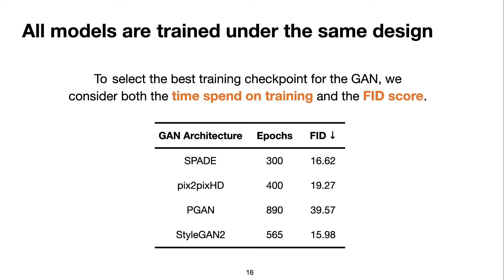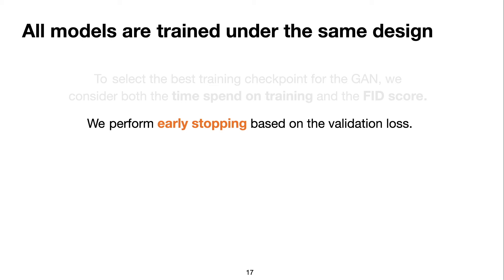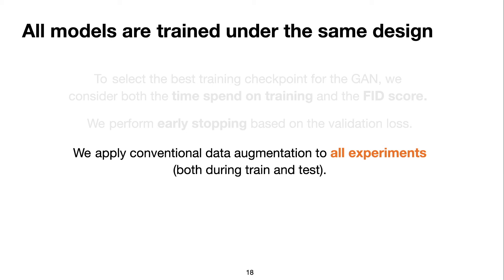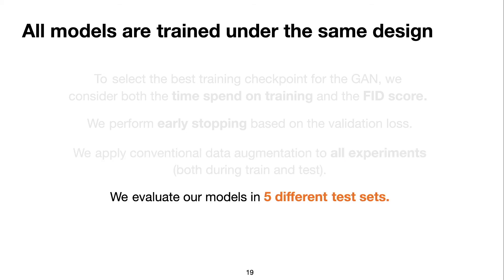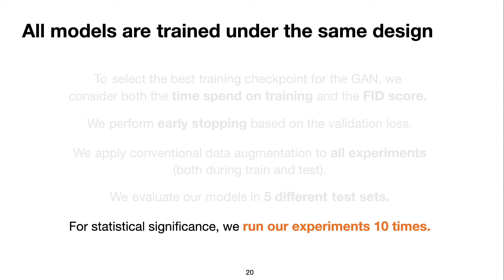To evaluate and analyze the factors I've shown, we carefully designed our experiments to consider all networks involved at their best performance, including the generative models. We select the GAN checkpoint used to generate the images based on time spent on training and the FID score, which is important because it directly influences the quality of the synthetic images we use. We also perform early stopping based on the validation loss, allowing each model to be at its peak performance at the time of evaluation. We apply conventional data augmentation to all our classifiers, both during training and test, since this can mitigate some fluctuations and also make our baseline stronger. To have a more reliable result, we evaluate our models in five different datasets of in- and out-of-distribution data. Finally, for statistical significance, we run each of our experiments 10 times.